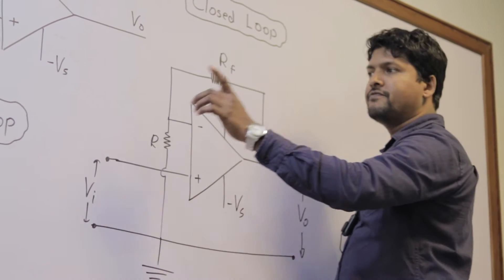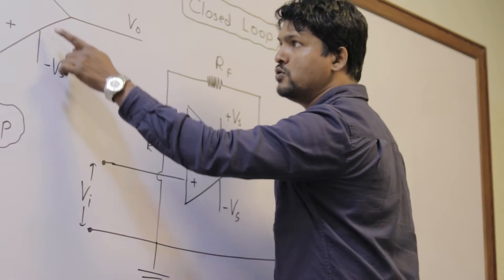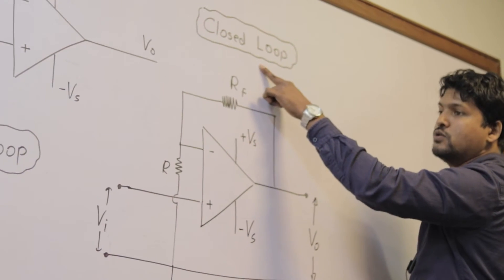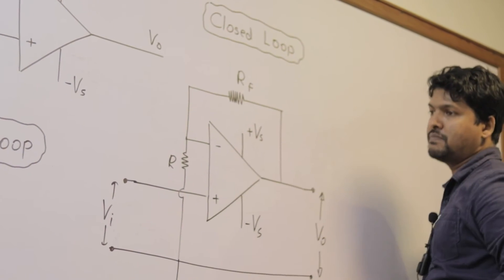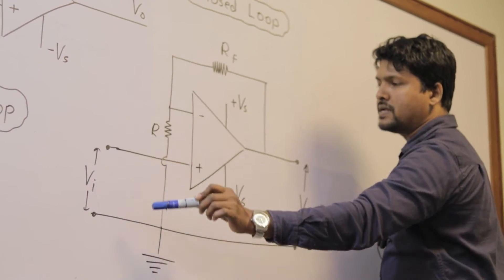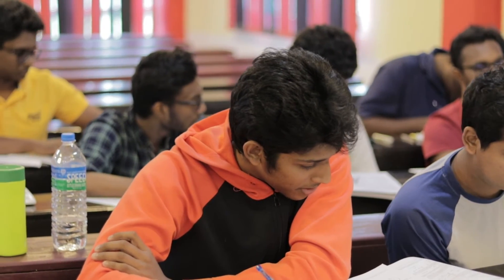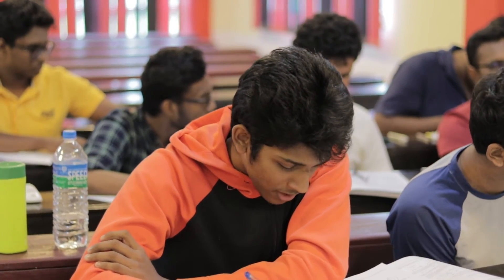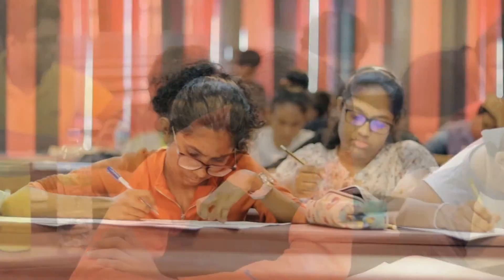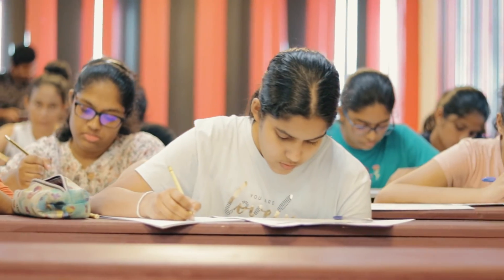The main difference between the open loop operation amplifier and the closed loop operation amplifier is that in the closed loop operation amplifier we are using a feedback. Continuous exams along with individual attention ensure your success in advanced level physics.